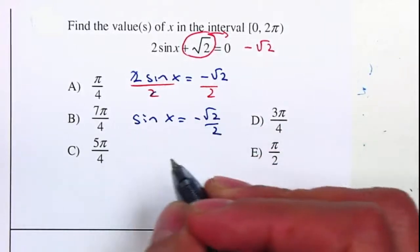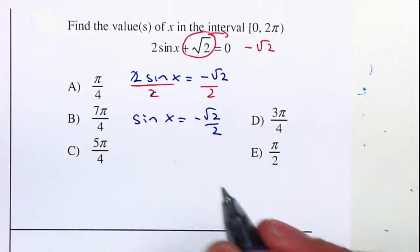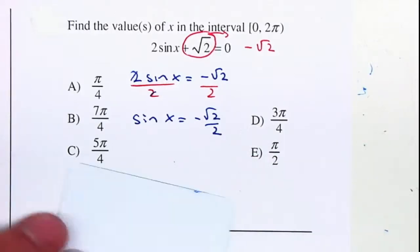Square root of 2 over 2 is a value that we know, one of the exact values. So therefore, I'm going to place my x and y axis.